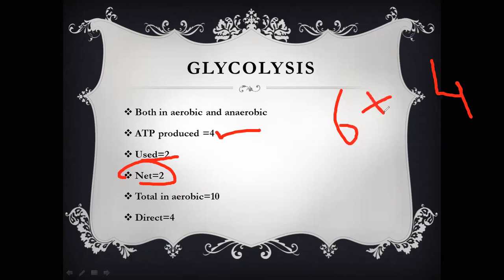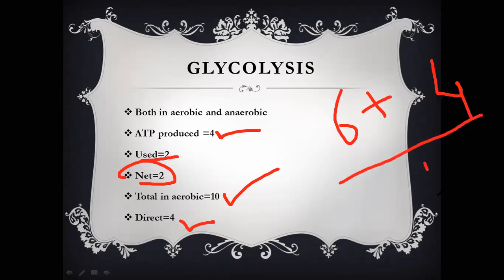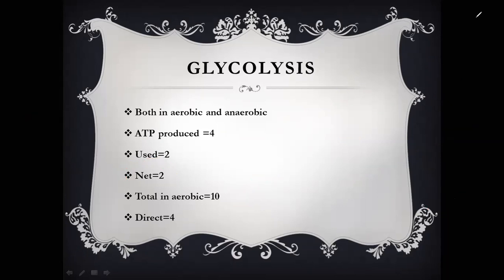Overall, a gross of 10 ATPs are produced from glycolysis in aerobic respiration — 4 from substrate-level phosphorylation and 6 from NADH via the electron transport chain. Since 2 ATPs are used in the whole glycolysis process, the net from glycolysis in aerobic respiration is 8 ATPs.